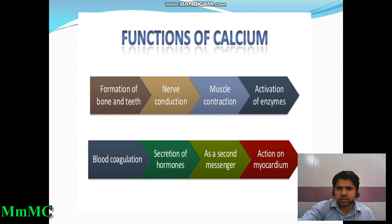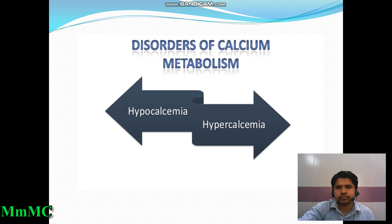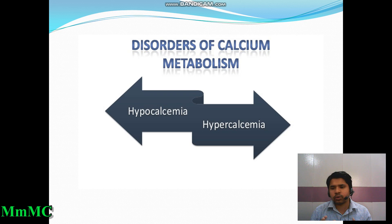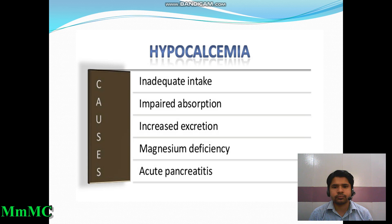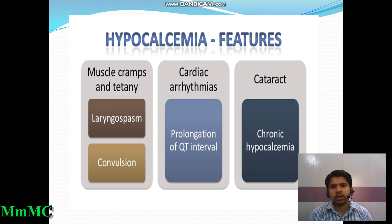Disorders of calcium metabolism include hypocalcemia and hypercalcemia. Hypocalcemia means decreased calcium ion concentration in the blood. Its causes include inadequate intake, impaired absorption, increased excretion due to renal disease, magnesium deficiency, and acute pancreatitis. The features of hypocalcemia include muscle cramps, tetany, and ultimately laryngospasm.